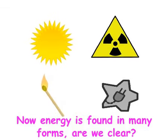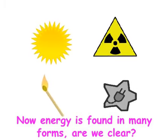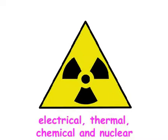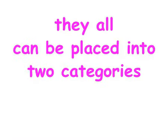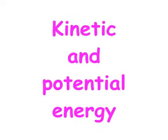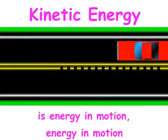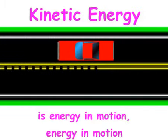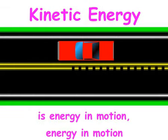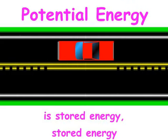Now energy is found in many forms, are we clear? Electrical, thermal, chemical, and nuclear. They all can be placed into two categories. That's kinetic and potential energy. Kinetic energy is energy in motion. Potential energy is stored energy.